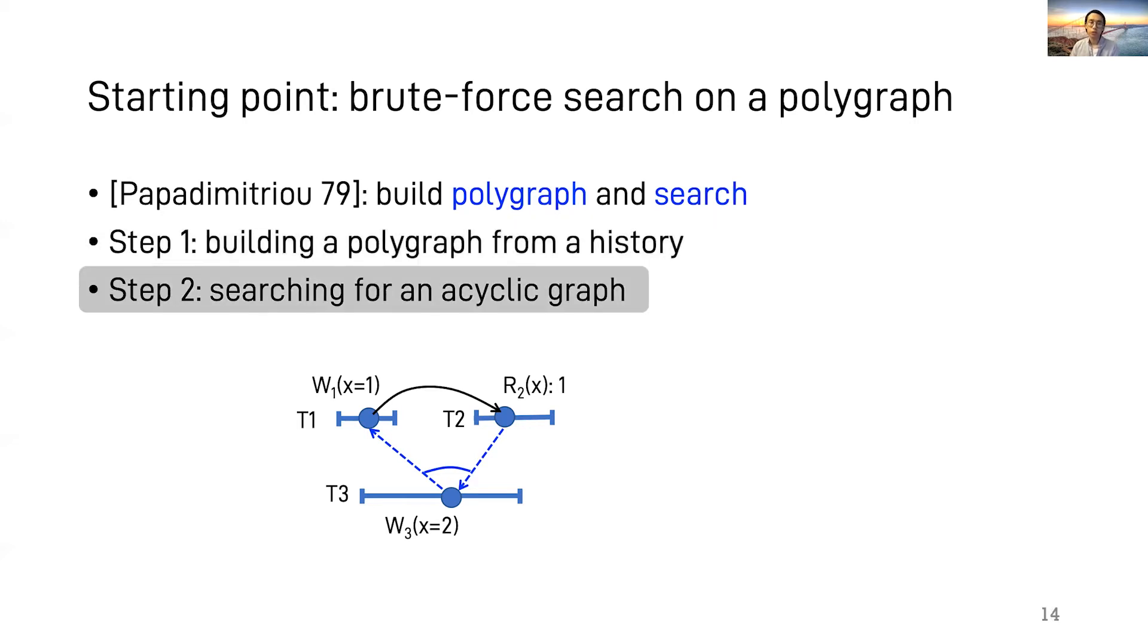With this polygraph, one could do a brute force search. First, choose one option in this constraint and check if the newly generated directed graph is acyclic. If it is, then these transactions are serializable. If it's not, then go back and choose the other option.